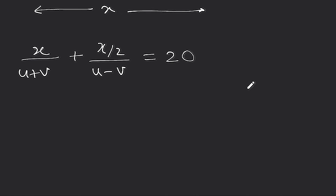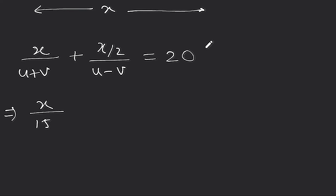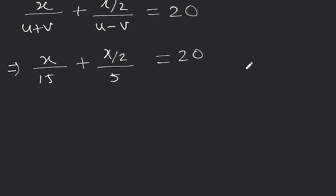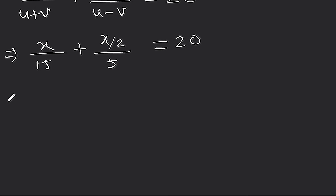So x upon (u plus v) — here x upon 15, because u plus v is 10 plus 5 equals 15. We have written the full formula to explain clearly. And here x by 2 upon (u minus v), where u minus v is 10 minus 5 equals 5. This is equal to 20.